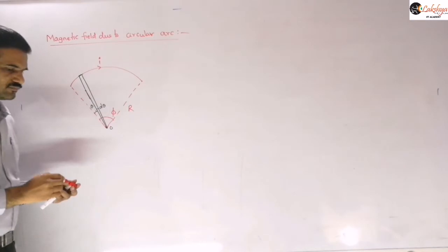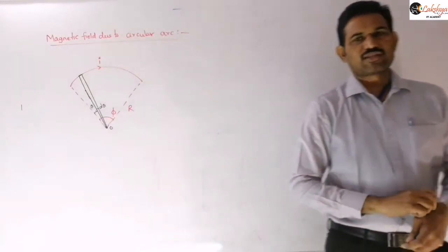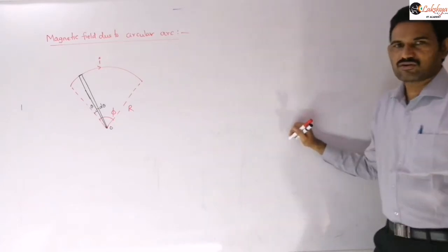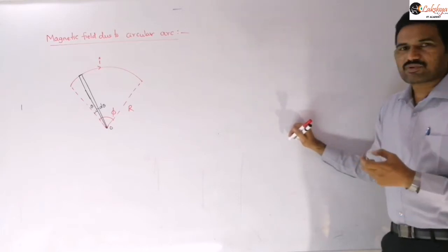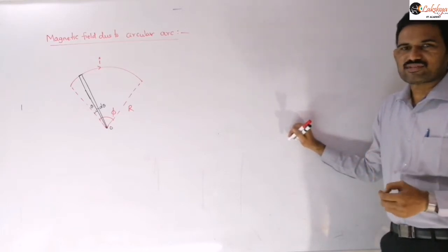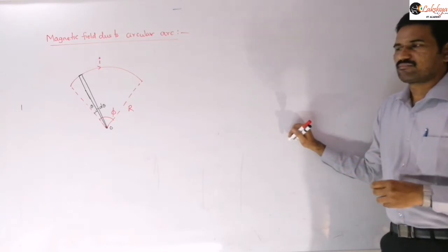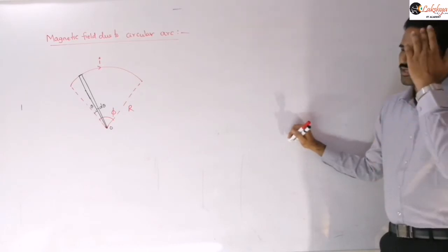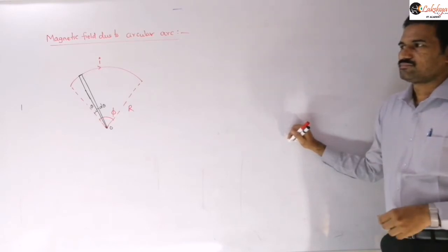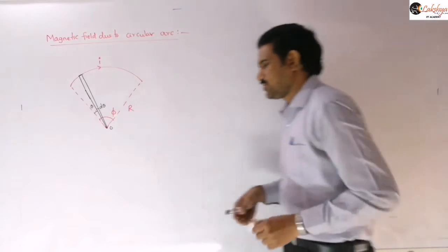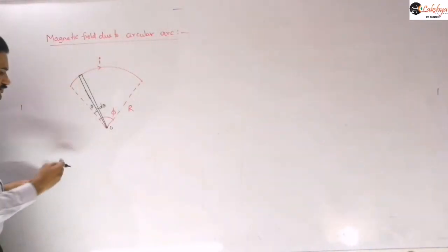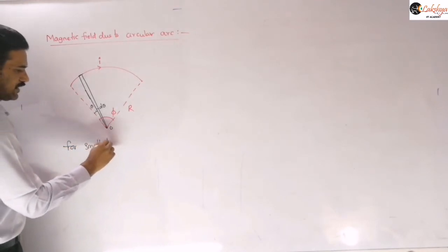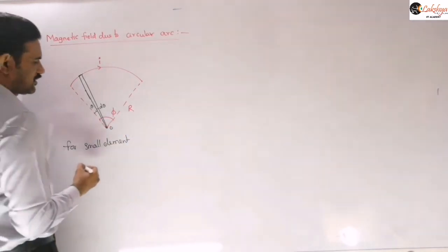Consider a small circular arc of radius r carrying current I, which subtends an angle phi at its center. I is the current flowing through the circular arc. We want to find the magnetic field due to a small element at the center of the arc.